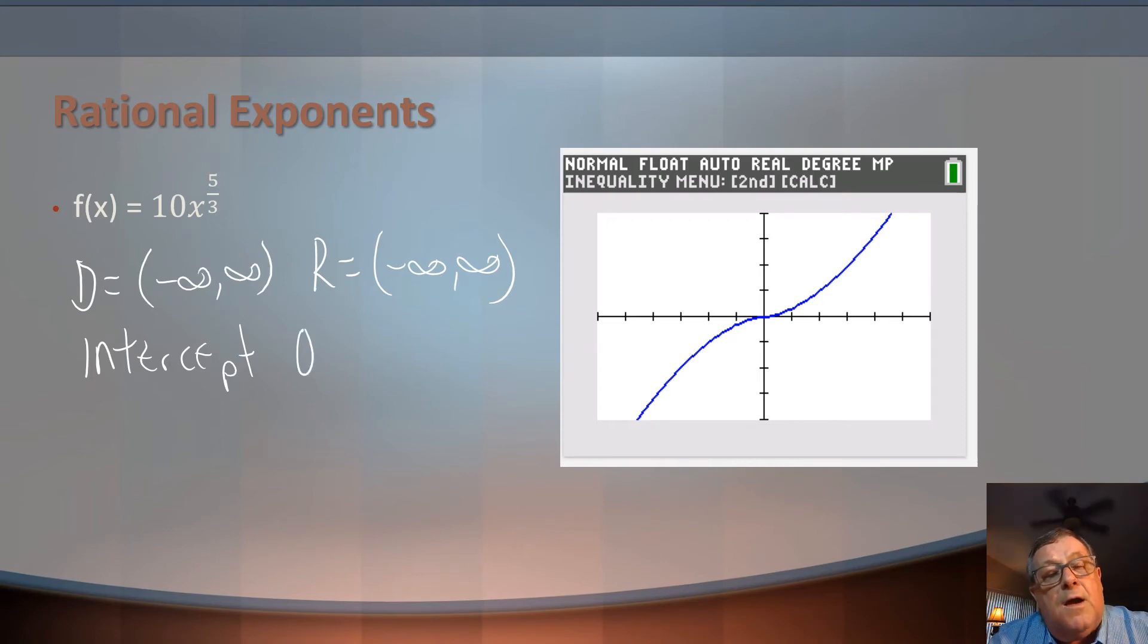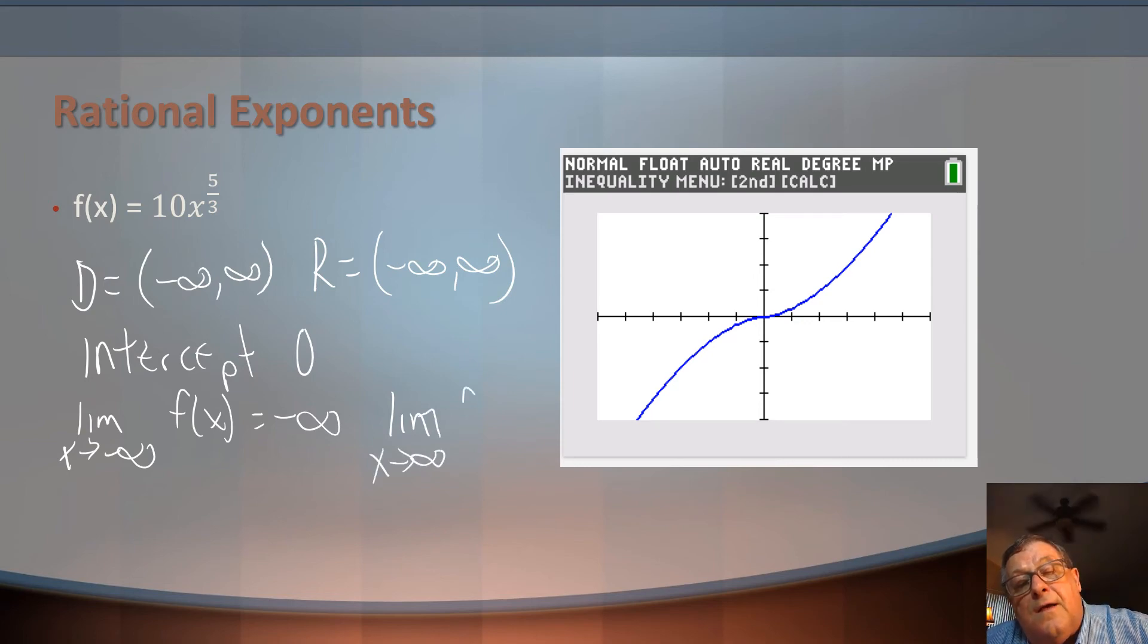Now, I do have left end and right end behavior. So on the left end behavior, we have a limit as x is approaching negative infinity. F of x is going to equal negative infinity. That's our left end behavior. And our right end behavior is going to be that we've got a limit as x is approaching infinity. F of x is going out towards infinity.